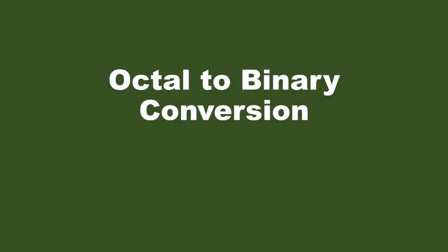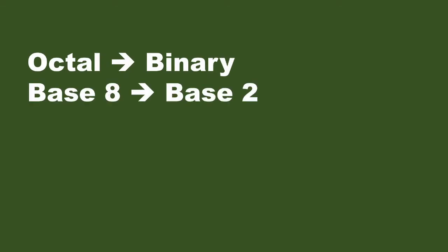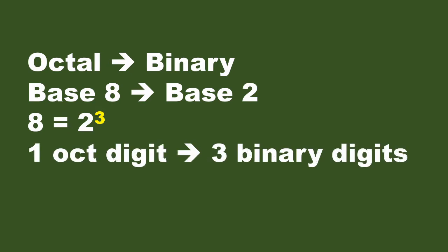Today we will learn how to convert from the octal number system to the binary number system. The octal number system has base 8, while the binary number system has base 2. Since 8 is a power of 2 — specifically 2 to the power of 3 — that means a base-8 number can be represented with three binary digits. So when we convert an octal number into binary, each octal digit will have three binary digits.